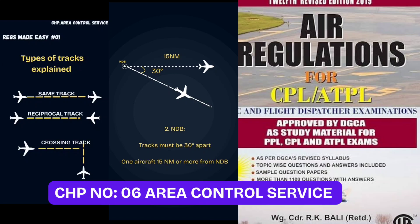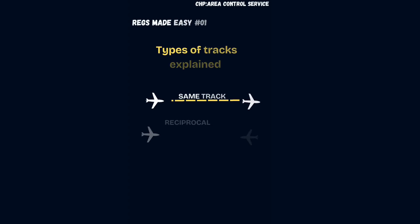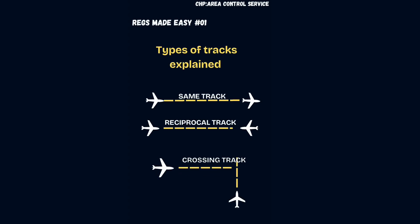In this video we will make area control separations easier to understand. First, let's learn how aircraft tracks are classified in air traffic control for applying safe longitudinal separation.